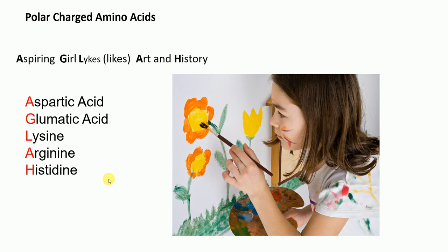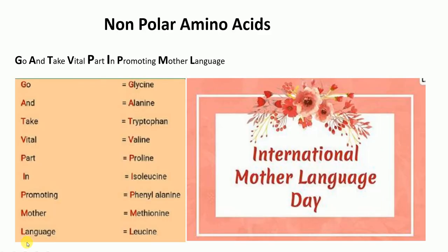Now the mnemonic for non-polar amino acids is: 'Go and take vital part in promoting mother language.' G for glycine, A for alanine, T for tryptophan, vital V for valine, part P for proline, I for isoleucine, promoting P for phenylalanine, mother M for methionine, and language L for leucine.